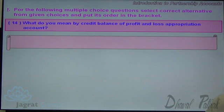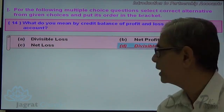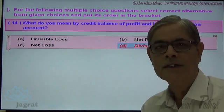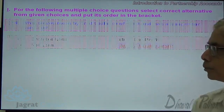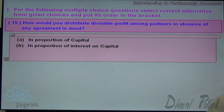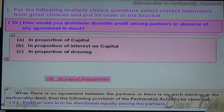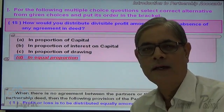Next. What do you mean by the credit balance of the profit and loss appropriation account? The options are divisible loss, net profit, net loss, and divisible profit. The credit balance of the profit and loss appropriation account is known as divisible profit — that which is distributed amongst partners in the ratio agreed between them. Option D — divisible profit — is the correct answer. Next. How would you distribute divisible profit amongst partners in the absence of any agreement in the partnership deed? It is distributed in equal proportion. Option D is the correct answer.